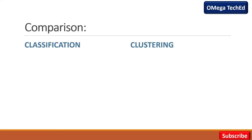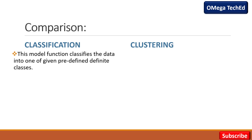Classification اور supervised learning کے بارے میں detail میں ہم اپنی previous videos میں discuss کر چکے ہیں۔ یہاں ہم discuss کریں گے difference between classification and clustering۔ Classification میں model function data کو one of the given predefined definite classes میں classify کرتا ہے۔ جب ہم data کو classify کرتے ہیں تو ہمیں پہلے سے پتہ ہوتا ہے کہ number of classes کتنی رہیں گی۔ For example، اگر ہمارے پاس red، green اور blue color کے marbles ہیں تو ہمیں پتہ ہے کہ data 3 classes میں divide ہوگا۔